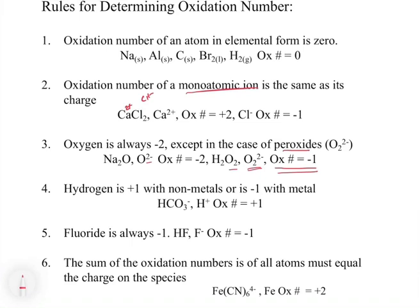The last one we're going to spend a few seconds on, because this is really fundamentally the most important thing. The sum of the oxidation numbers of all the atoms must equal the charge on the species. Let's take a look at this Fe(CN)6 four minus example in a little bit more detail on a fresh slide.